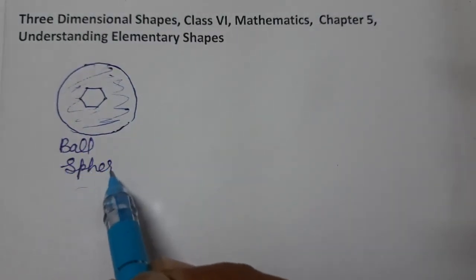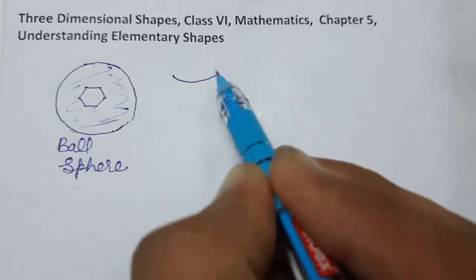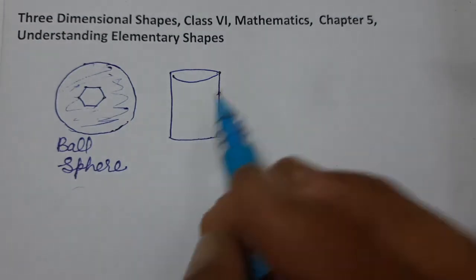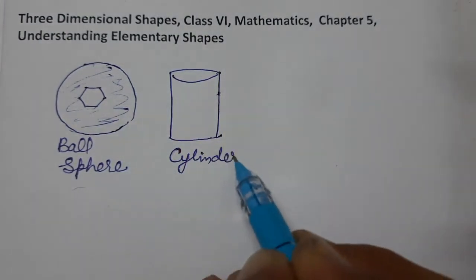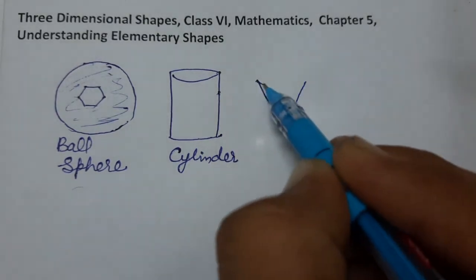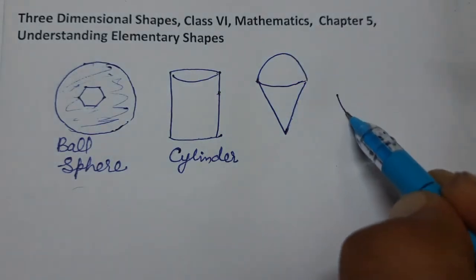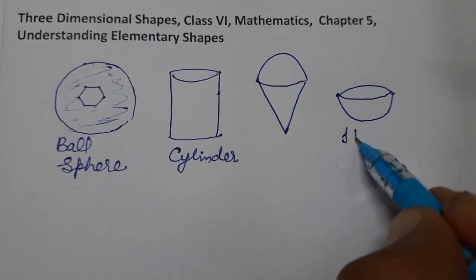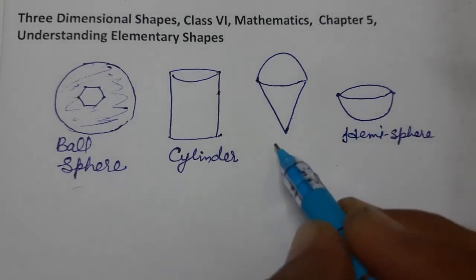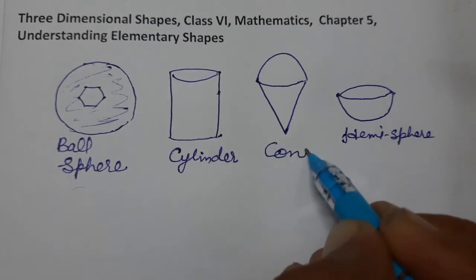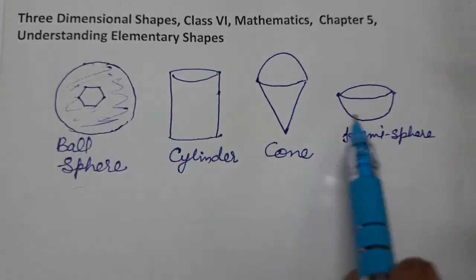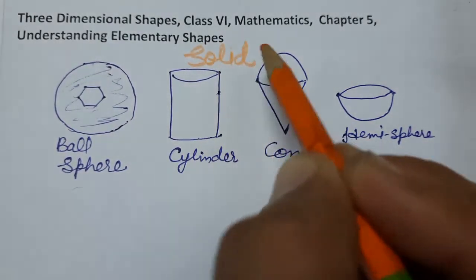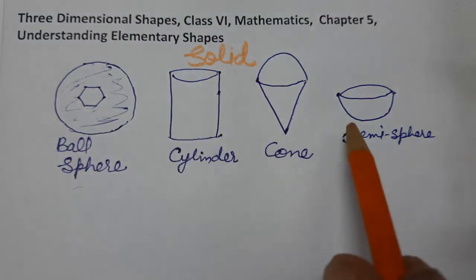The shape of a ball is called a sphere. Then we have seen cylinders around us. We have also seen an ice cream cone shape, and hemisphere — which is half of a sphere. 'Hemi' means half. Each of these shapes is a solid shape.